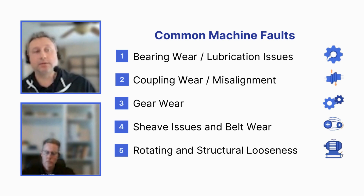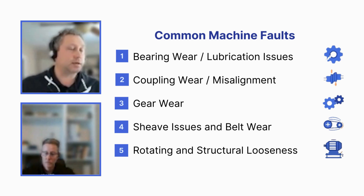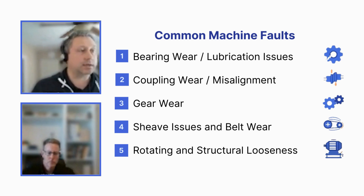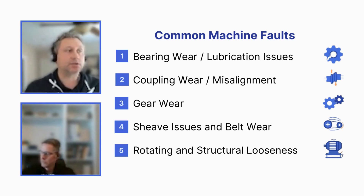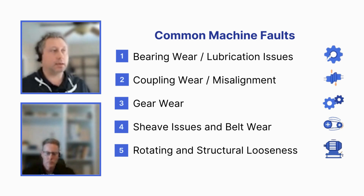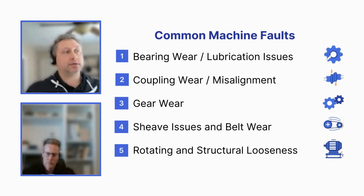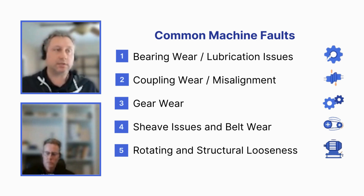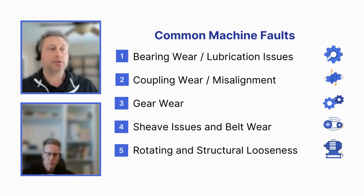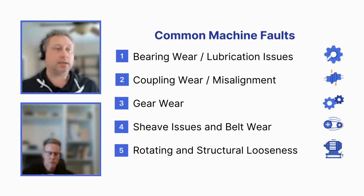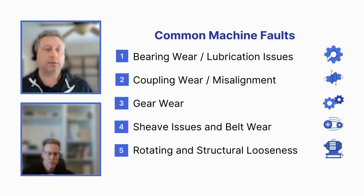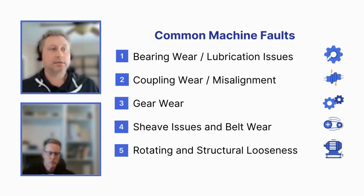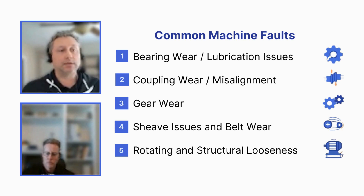Once bearing wear starts getting really bad, it can actually start merging with other types of faults. This is an example of an extreme level of bearing wear. Seeing a frequency in the spectrum doesn't always necessarily mean it's that fault type — you always have to dive a little bit deeper, take additional pieces of information, build your case and your evidence. You want multiple sources to identify when it's one type of fault or another.